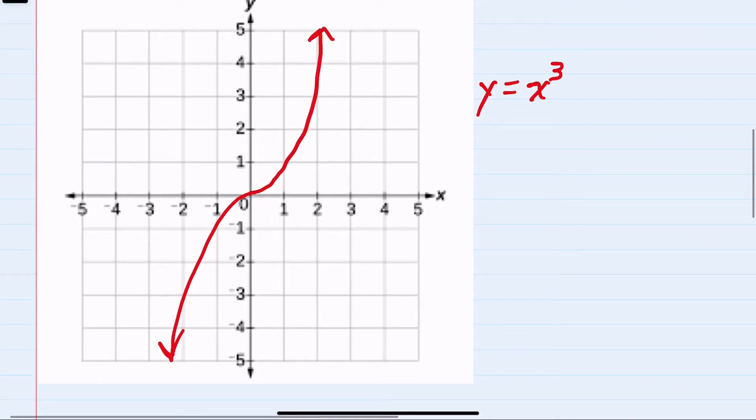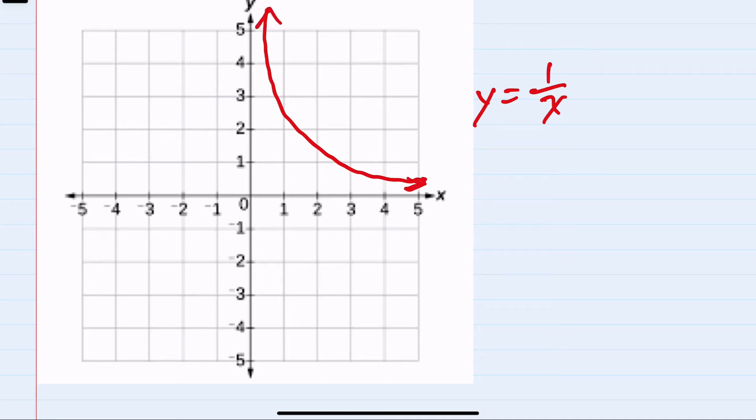So we'll continue by looking at the last two. First, we would have y equals 1 over x, which has sort of an hourglass shape, like so.